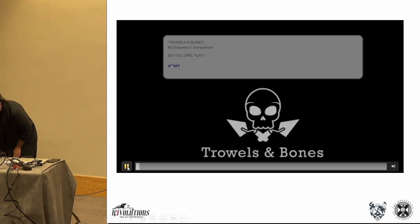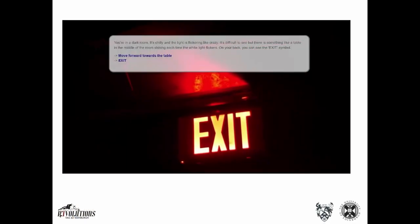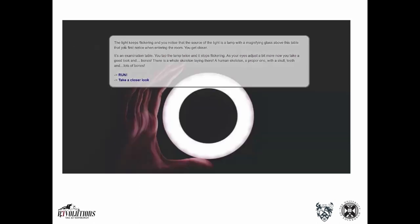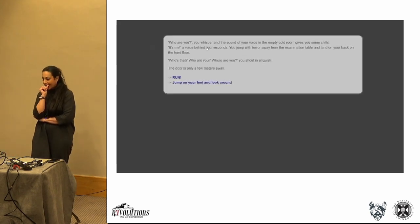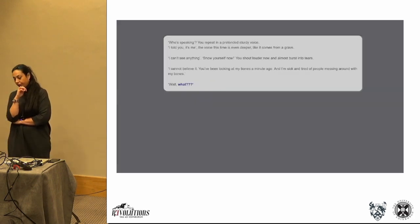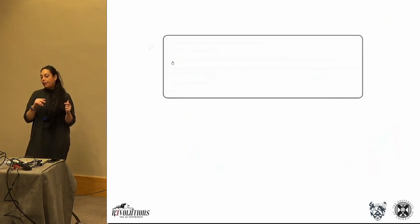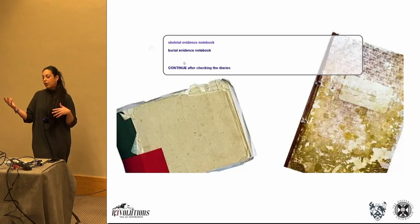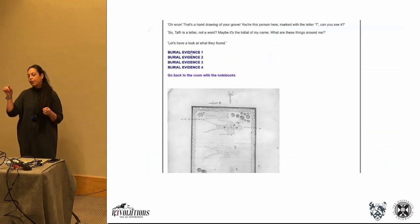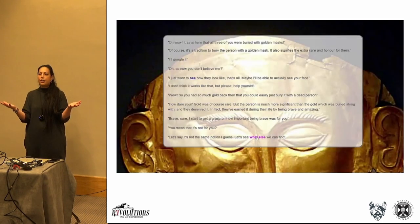I'll play a demonstration now. I have tried to put, very roughly, the two different sources — Stamatakis's diary and the skeletal report — in the sense of clues, so the user can go through the clues and essentially have everything in their hands and make their own interpretations.